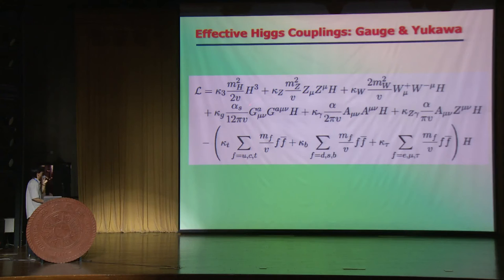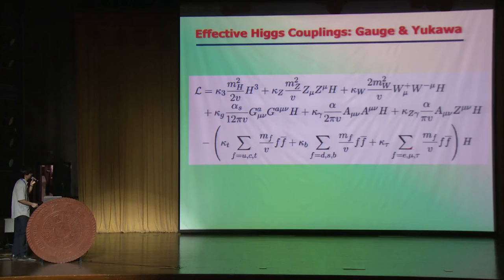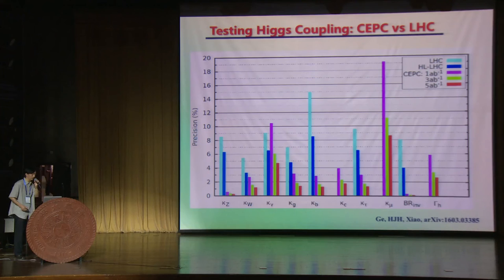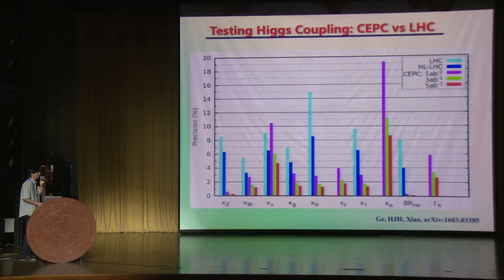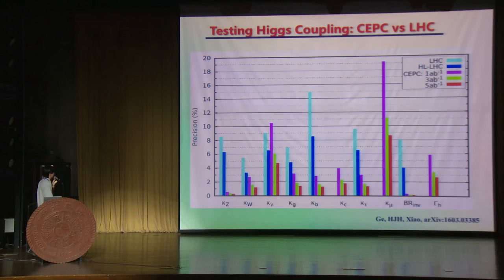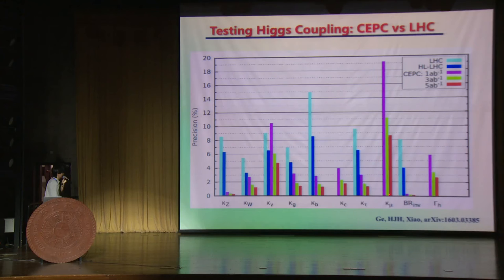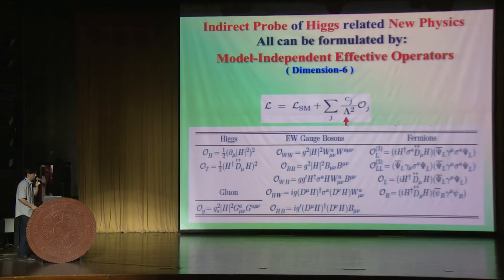If we characterize all the Higgs couplings in an effective way using κ parameters — κ_Z, κ_W for gauge couplings, κ_T, κ_B for Yukawa couplings, and so on — this preliminary study shows how the CEPC controls all those couplings. Compared to the LHC in light blue and the high-luminosity LHC in dark blue, the CEPC at 250 GeV achieves most couplings at a few percent, with some even around 1%. We also have sensitivities to the b, τ, and μ Yukawa couplings.